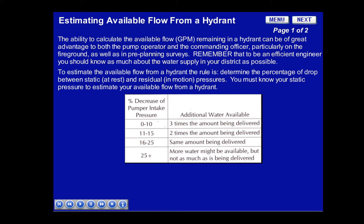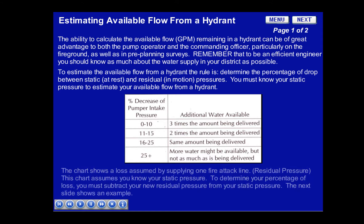And if you have a loss between 16% and 25%, you will be able to deliver the same amount of water through your original line. If you have a loss greater than 25%, more water might be available, but not as much as being delivered. The chart shows a loss assumed by supplying one fire attack line, which will mean your residual pressure. This chart assumes you already know your static pressure.